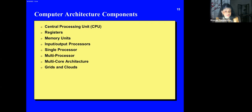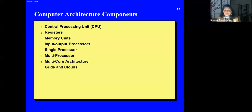The CPU is the heart of the computer that controls everything. There are memory units, registers, and input/output for data. A system could have one processor or multiple processors, and you can pack multiple processors into a chip — that's a multi-core architecture. There are also grids and clouds. For the lack of time, I'm covering this very briefly — you can go and read up on these things, as they're not strictly part of security.